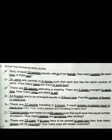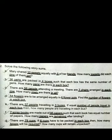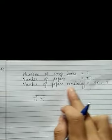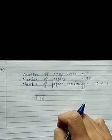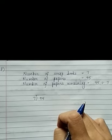Question F: Seven scrapbooks are made out of 95 papers such that each book has an equal number of papers. It is clear that we will have a remainder in this problem. Write the statement: number of scrapbooks is equal to 7, and number of papers is equal to 95.